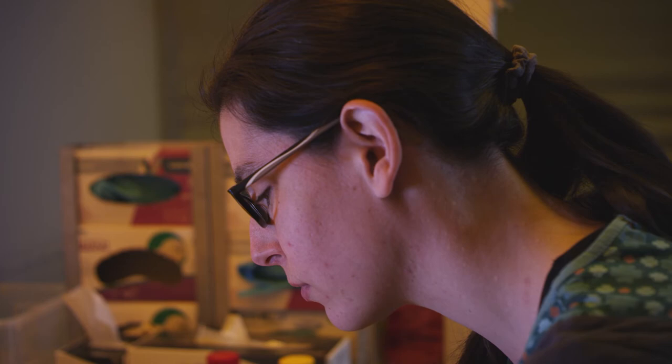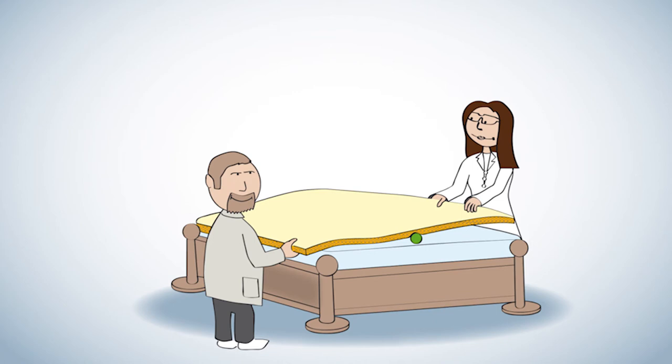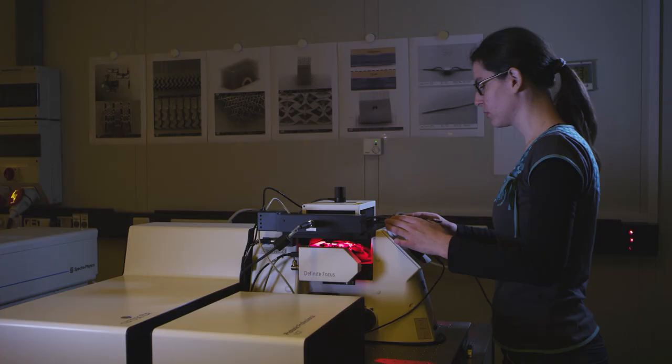The fairy tale of the princess and the pea is helpful in explaining the qualities of the material. A hard cylinder is installed inside the invisibility cloak whose cavity can hold all kinds of objects. The metamaterial structure hides them completely. The princess would no longer feel the pea.